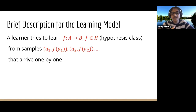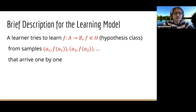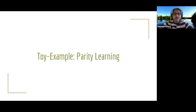A brief description of the learning model: a learner is trying to learn an unknown function f chosen from a hypothesis class, and it tries to learn this from a stream of samples of the form (a, f(a)), where these samples arrive one by one.